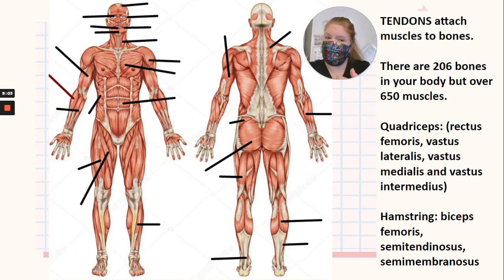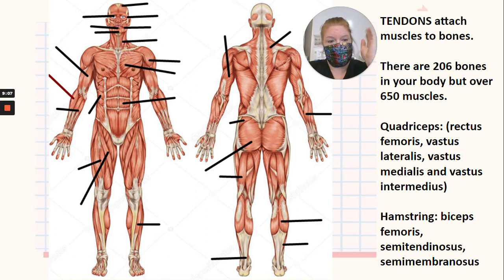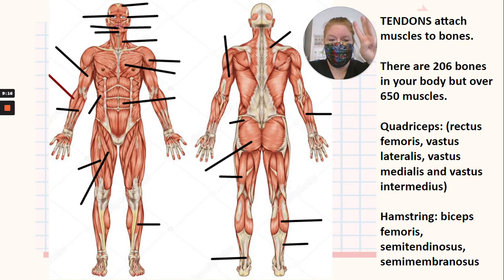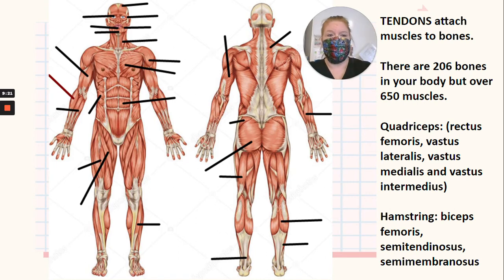The quadriceps, remember, is made up of four muscles. In case you were curious, you can see those names right there, but I'm not having you memorize them. And then we have the hamstrings made up of three muscles — you can see the names there, but again, you don't have to remember those names.